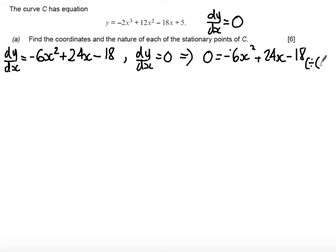So what I'm going to do is I'm going to divide both sides of this equation by minus 6. And what this leaves us with is x squared minus 4x plus 3 is all equal to 0.